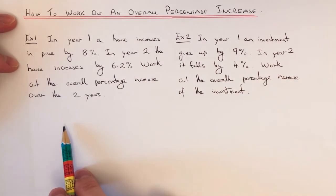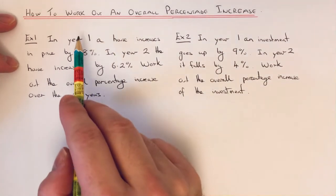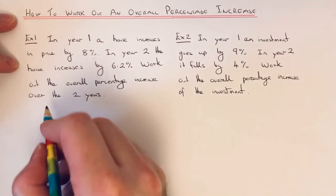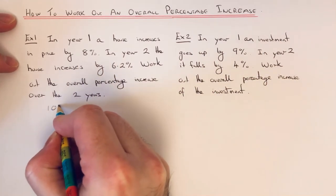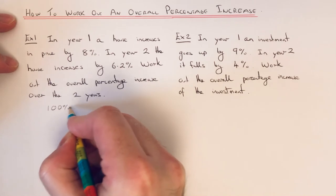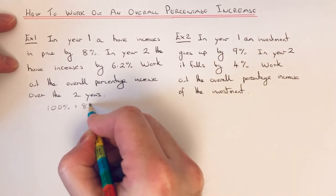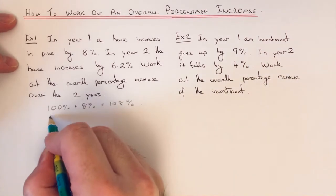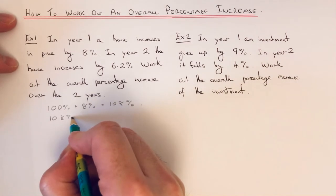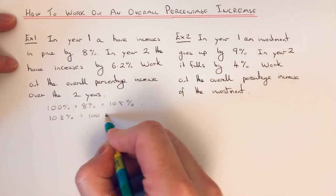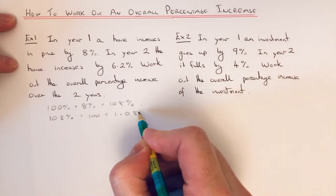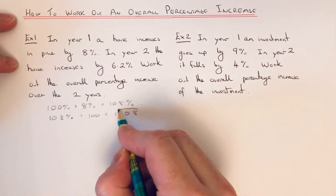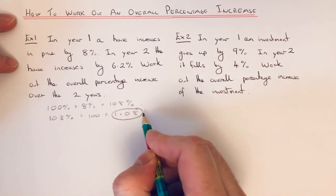What you need to do is work out your decimal multipliers for year 1 and then for year 2. In year 1, the house price increases by 8%, so add that percentage onto 100% to give 108%. Convert that into a decimal by dividing by 100, which is 1.08. So that is our decimal multiplier for the first year.